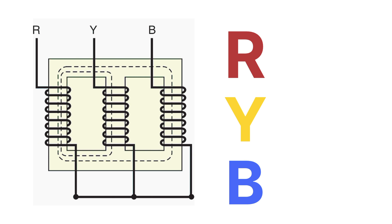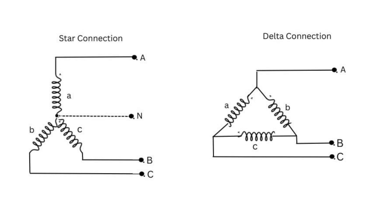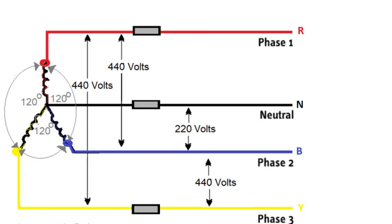In a transformer there are two connection types available: the first is star connection and the second is delta connection. Here we will consider only star connection. We use star connection because in star connection a neutral is available, whereas in delta connection there is no neutral available. That is why we are considering star connection.